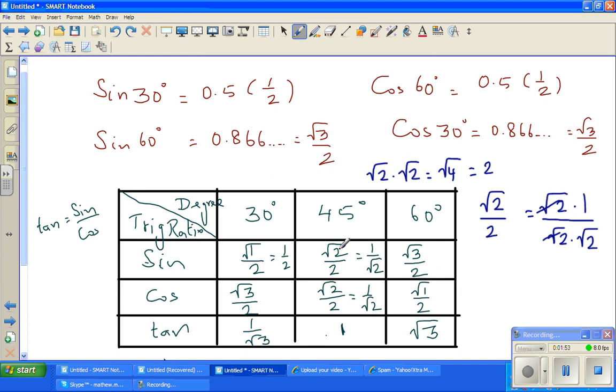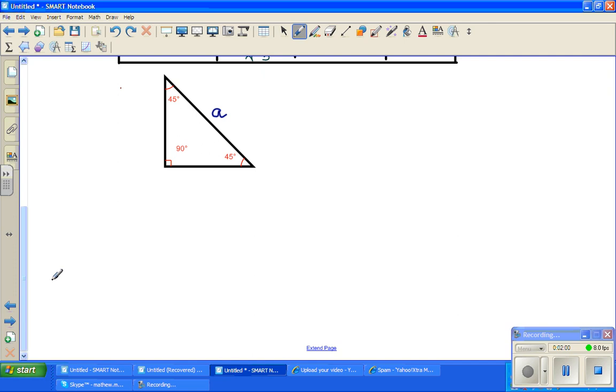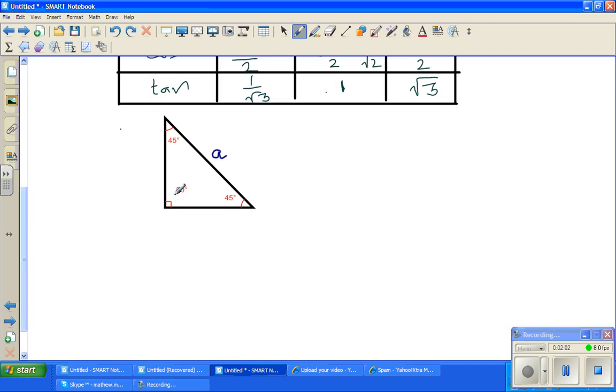I'll explain how you get 1 over root 2. I've drawn a simple 45 degree right angle triangle. If 2 angles of a triangle are equal - this is triangle ABC - this angle and this angle are equal, so AB will be equal to AC. Let me say if this is x, this will also be x.